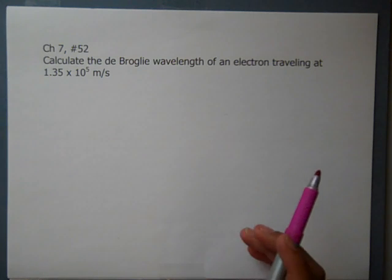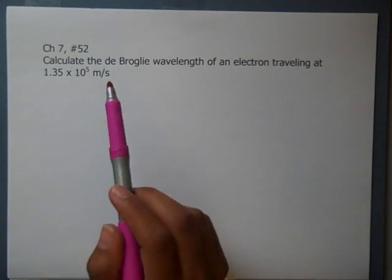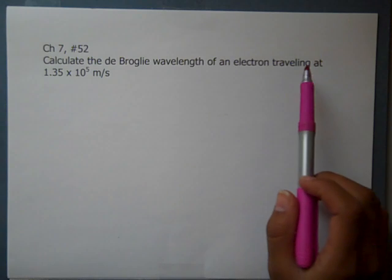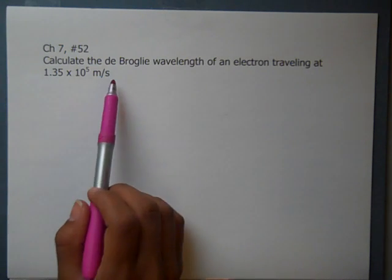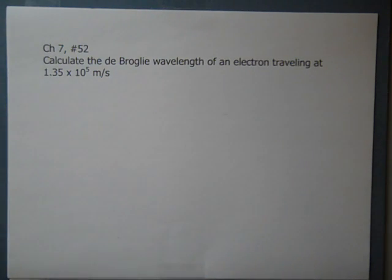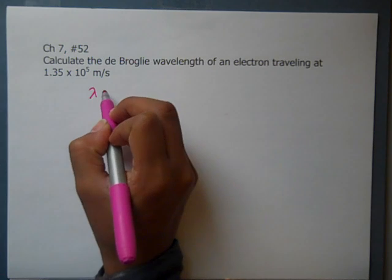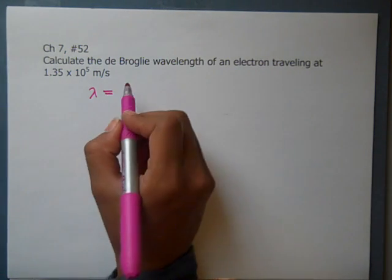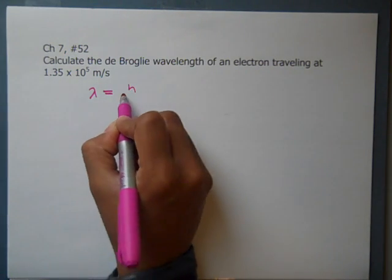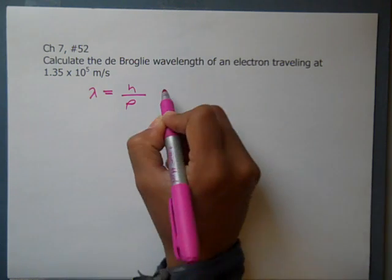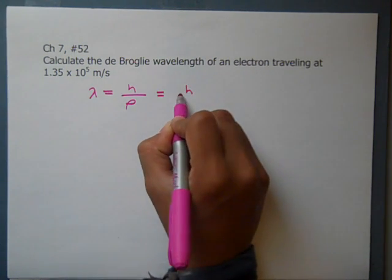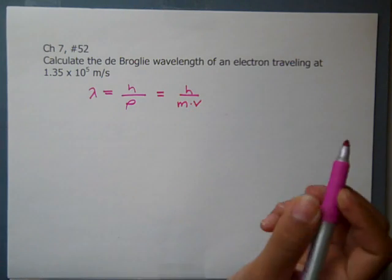Remember we have a formula for de Broglie wavelength, and this problem is asking us to calculate the de Broglie wavelength if an electron is traveling at the following velocity: 1.35 times 10 to the fifth meters per second. It's important to remember our formula for de Broglie wavelength, and that is de Broglie wavelength will equal h, Planck's constant, over momentum, which is also h over mass times velocity.